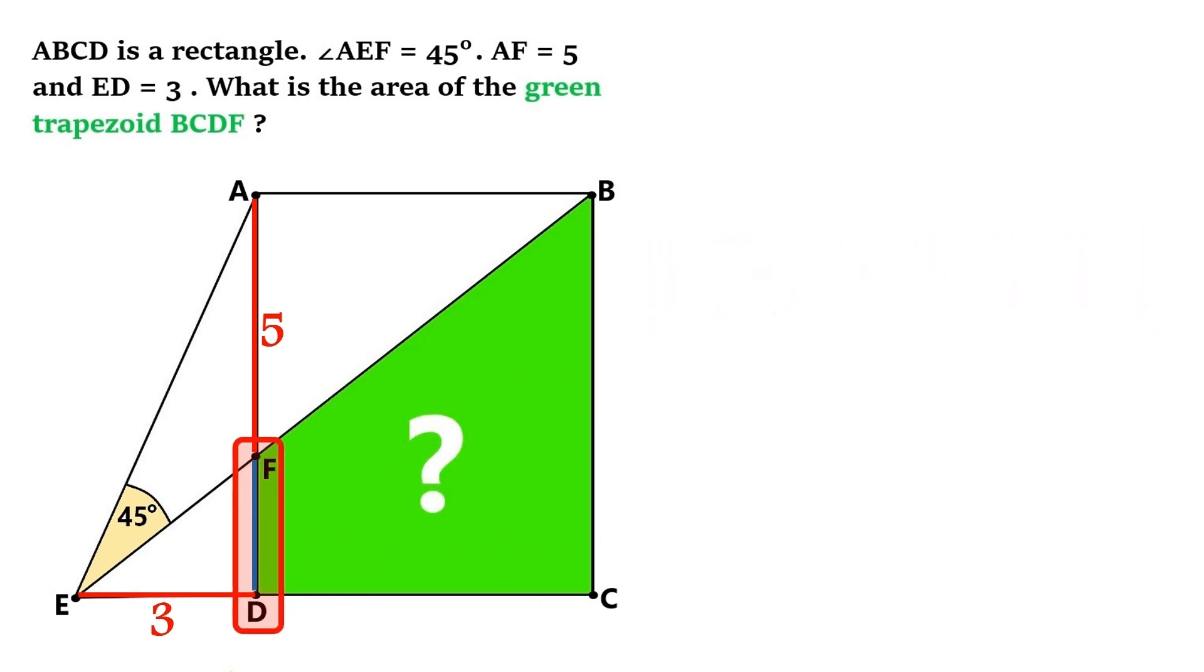Let's call this segment FD the distance X, and we'll call this angle down here alpha. We know this other angle is 90 degrees, because it is at the vertex of the rectangle. That means this triangle EFD is a right triangle. And in a right triangle we can take these two sides and combine them into a fraction like this. And that will give the tangent of the angle alpha.